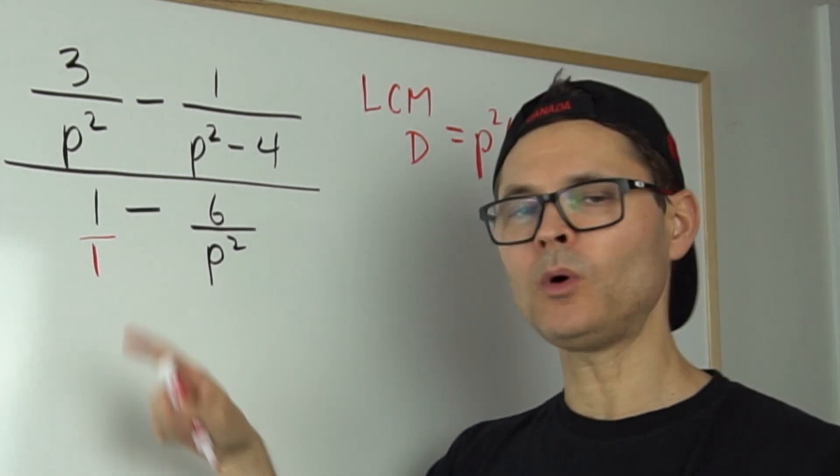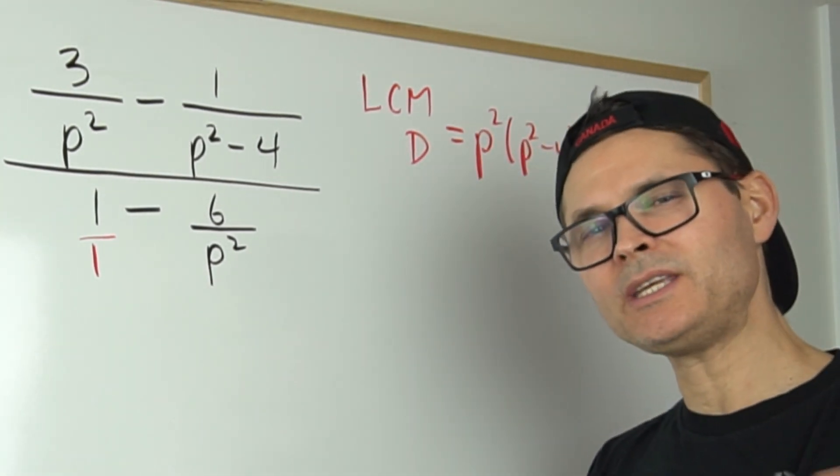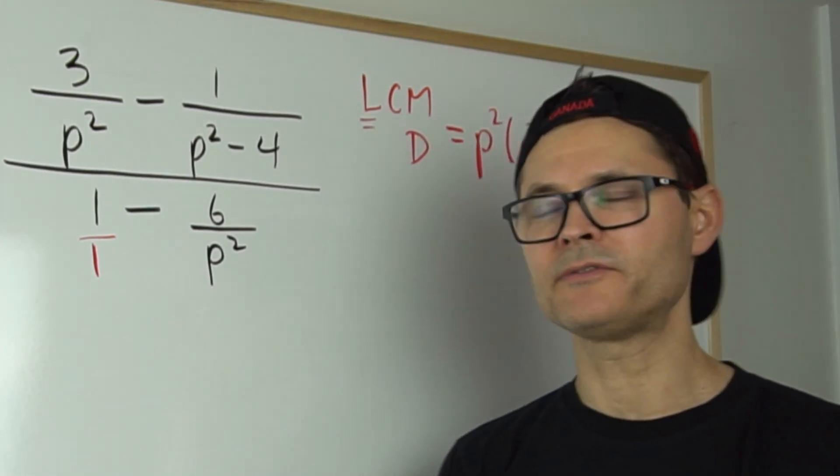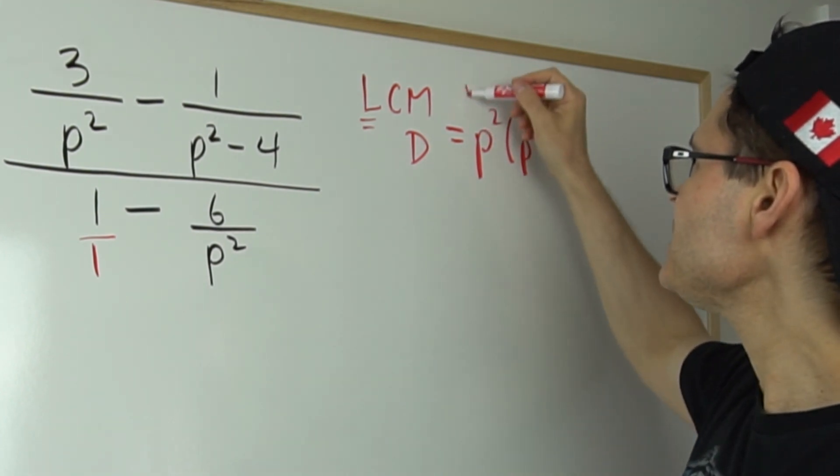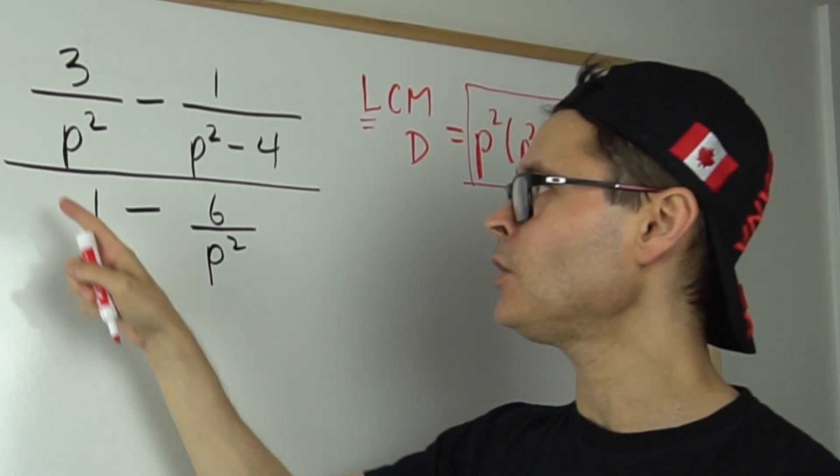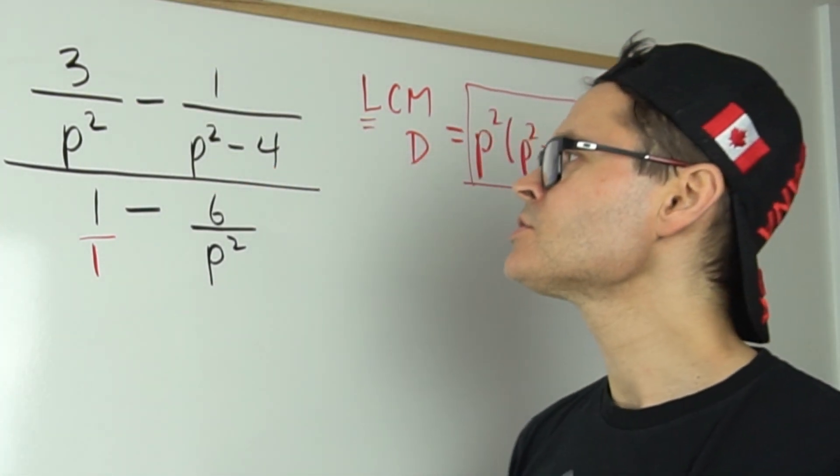Come to one—well, one goes into anything and p squared goes into this, so I don't need to build it up any further. I want the lowest common multiple or divisor, so that should be good. So p squared times p squared minus four becomes the lowest common denominator of all the little baby denominators.